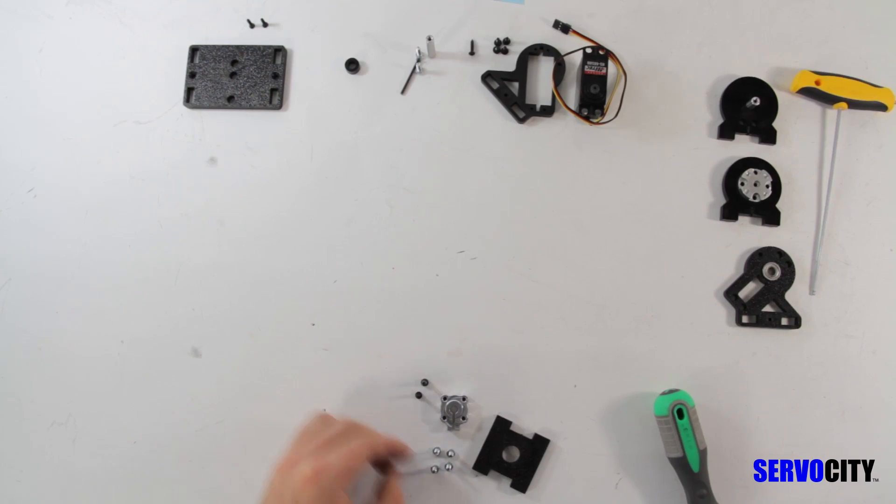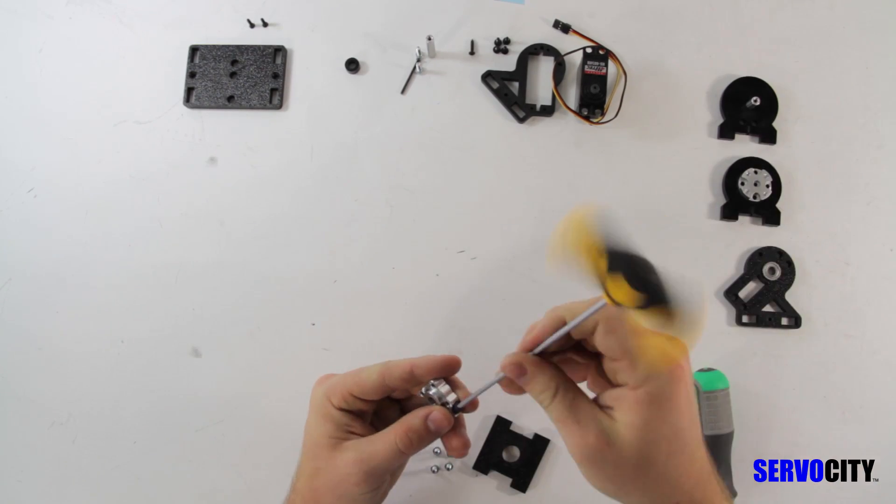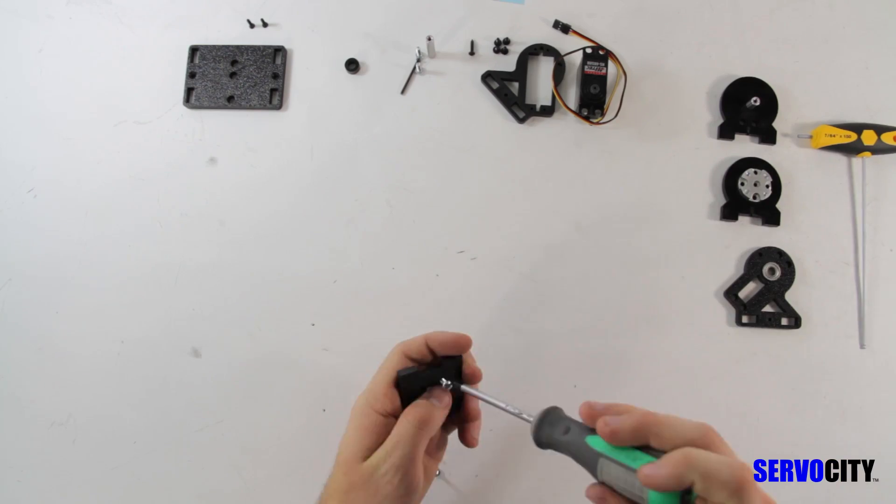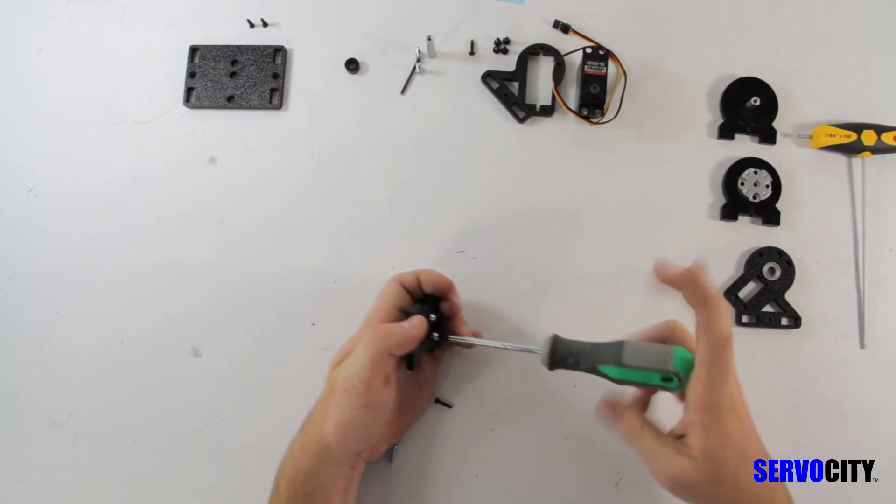First, feed the socket screw into the clamping hub, then press the hub into the ABS plate and fasten it in place with the pan head screws.